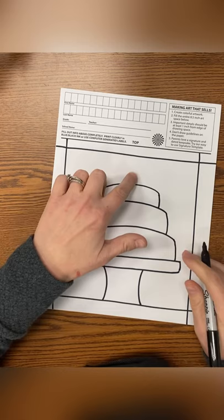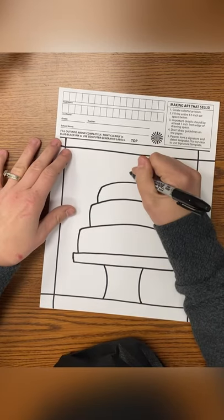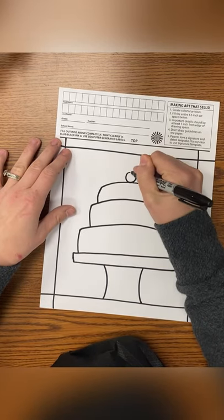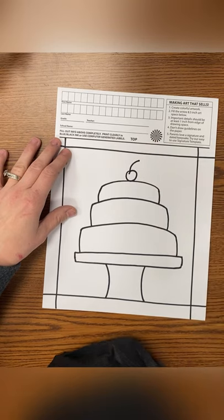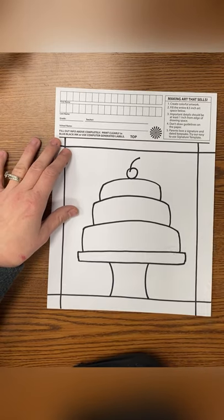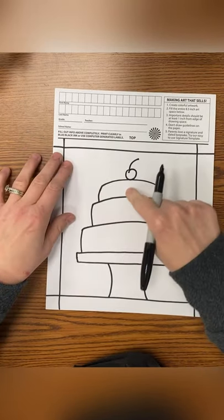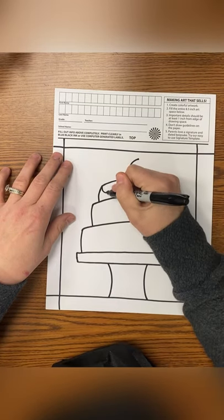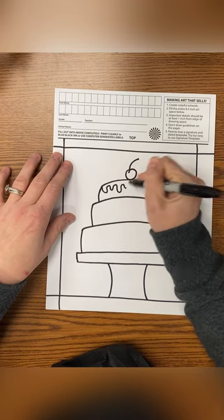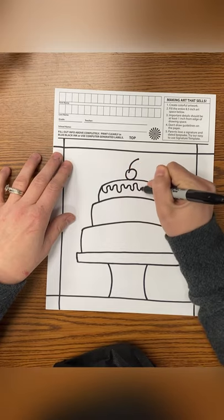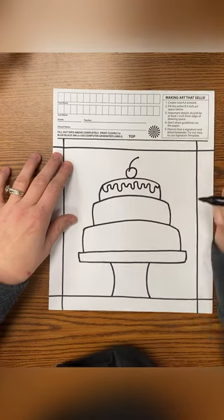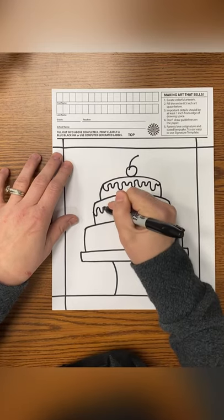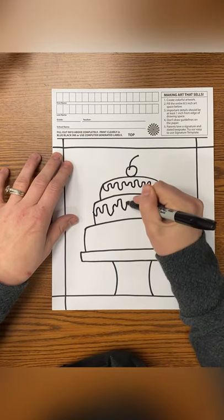And then I'm going to draw something on top. Draw a cherry. Frosting. Draw a wavy line.